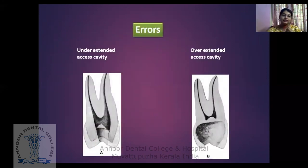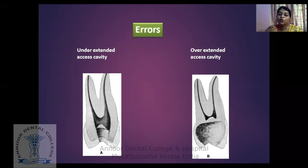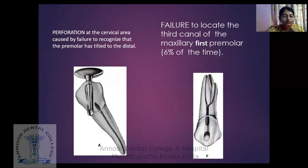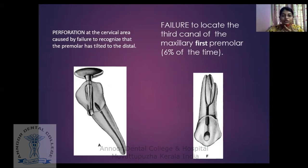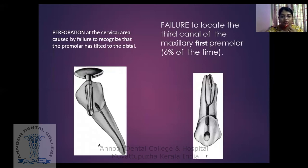The errors mainly seen in premolars are under-extended access cavity — when you prepare very minimally, there can be under-extension, leading to difficulty in obturation, cleaning and shaping, and incomplete removal of the pulp. In the case of over-extended access cavity, you are compromising the tooth structure. Then perforation — if you are not familiar with the anatomy of the tooth it can lead to perforation. The anatomy and angulation should always be noted before proceeding with root canal preparation. Then failure to locate the third canal — since variations can exist in all tooth forms, additional canals may be present. If a proper access opening is not done, these additional canals can be missed.